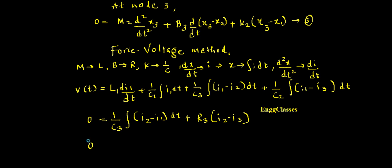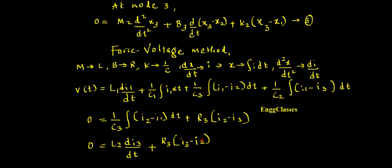From the third equation: 0 = m2, which becomes L2·(dI3/dt), plus b3 which is R3 into bracket (i3 - i2), plus k2 which is (1/C2) and I have the integration of (i3 - i1)·dt. So these are the three converted equations.